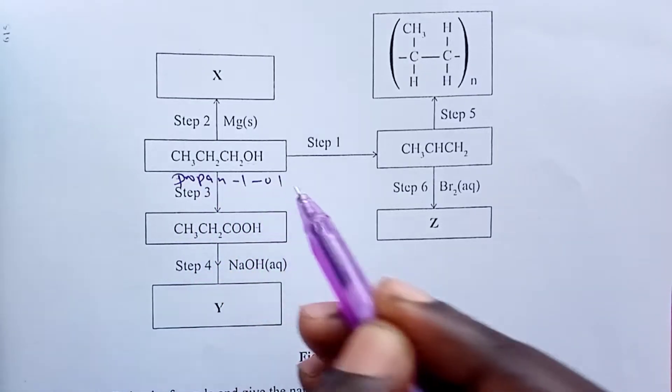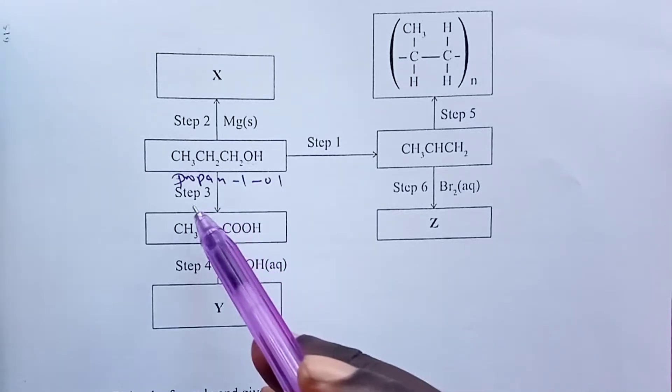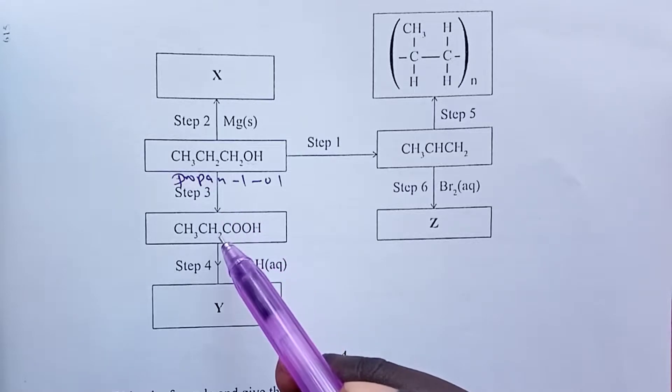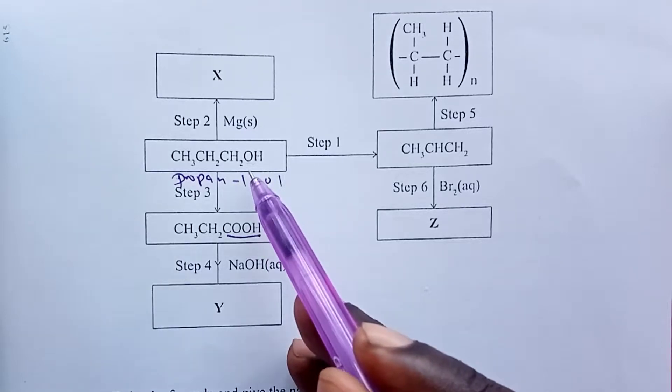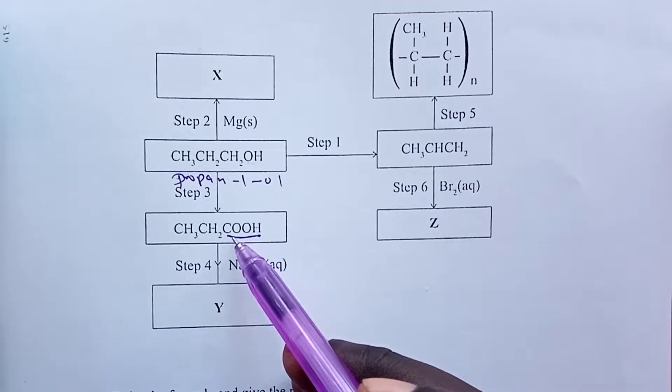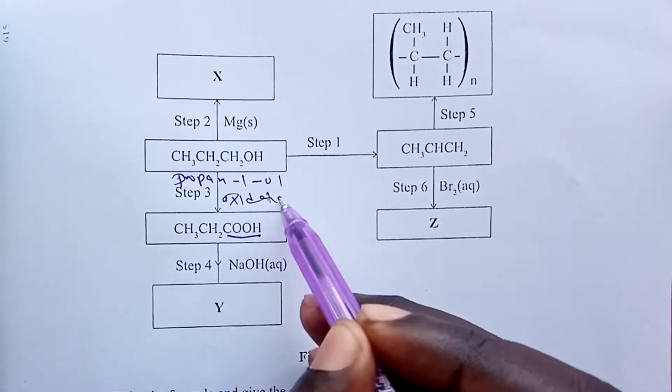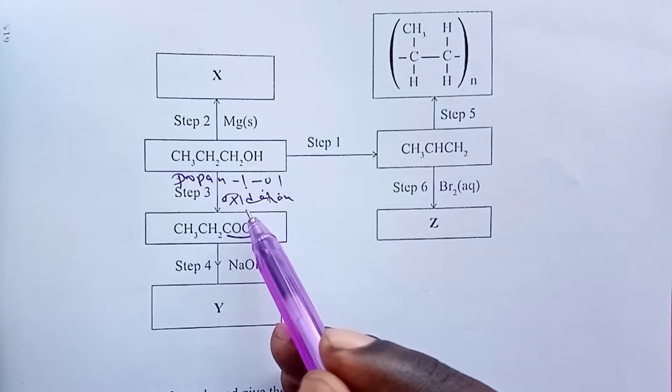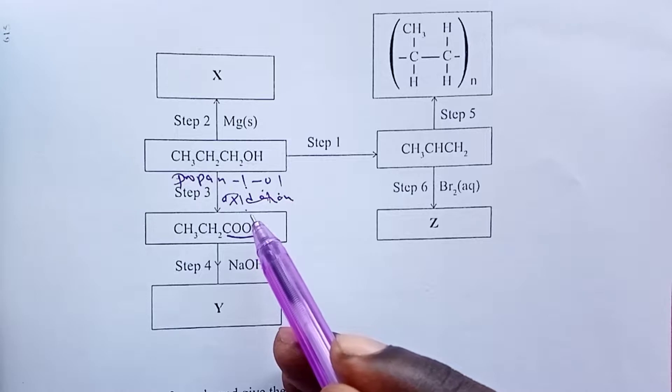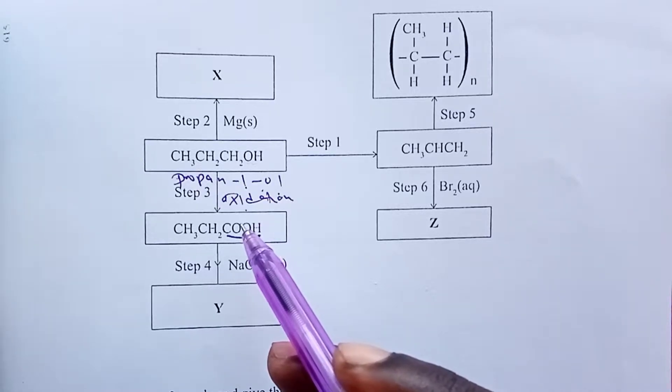Let's move down. In step three, we are obtaining an alkanoic acid out of an alkanol. So step three involves what we call oxidation. As we follow the table and write the names of these processes, we need to start thinking of the reagents used for each process and if possible the conditions.